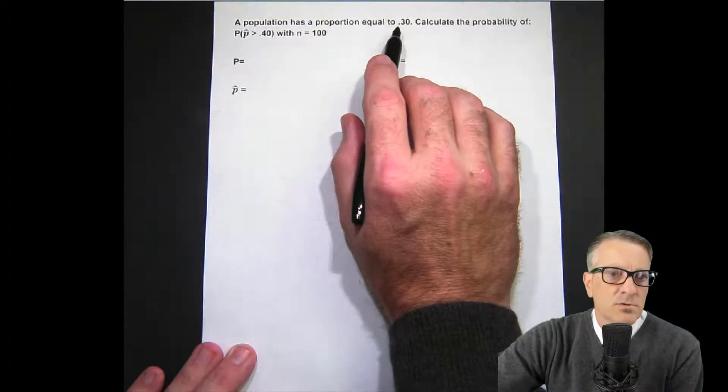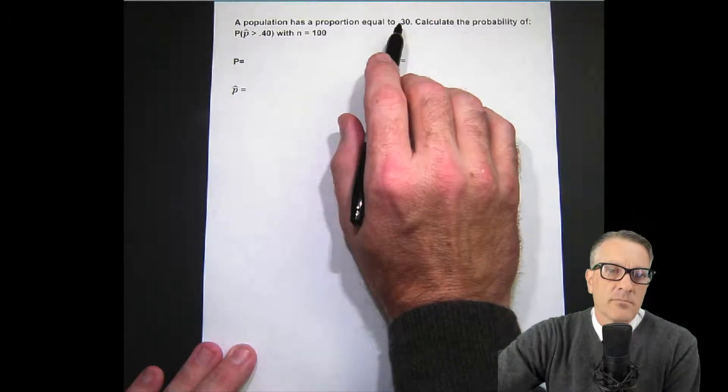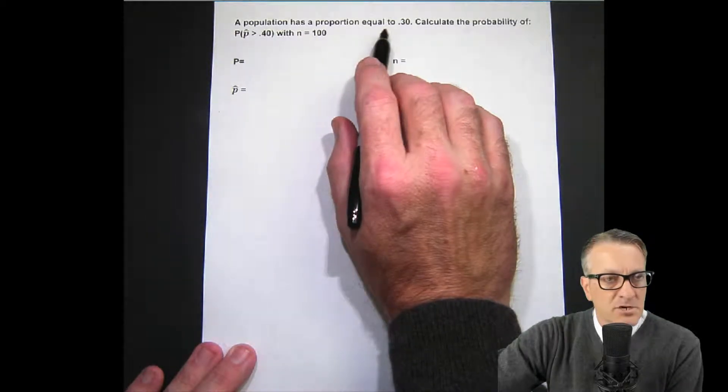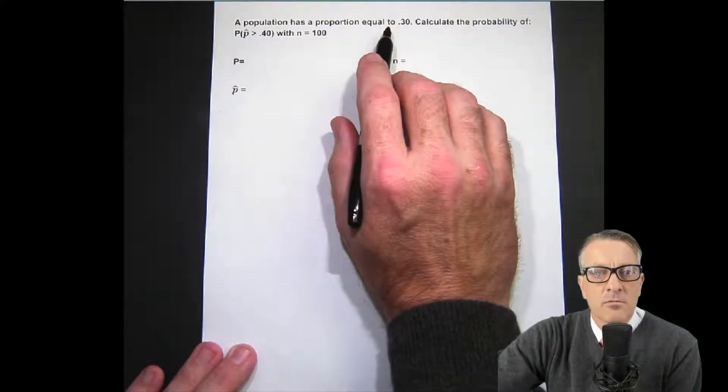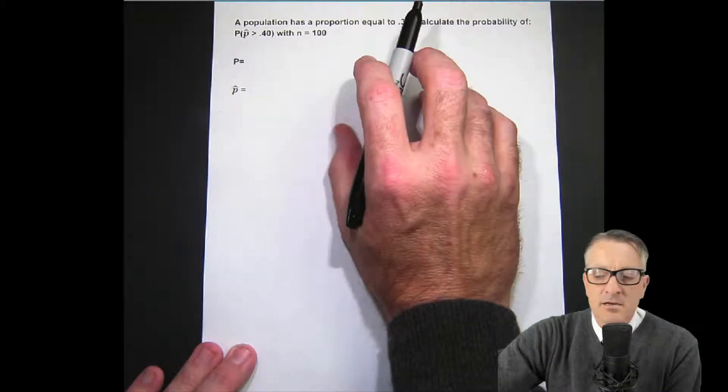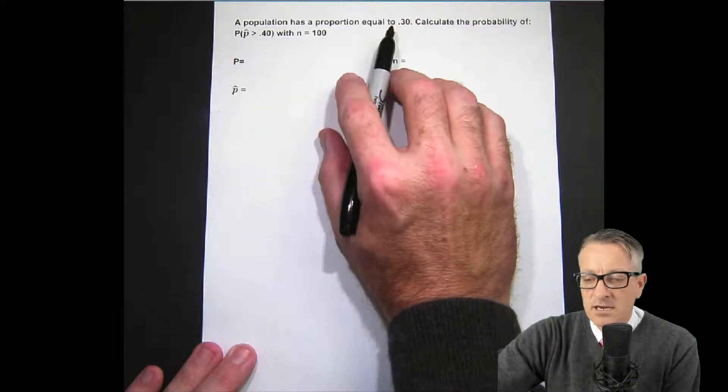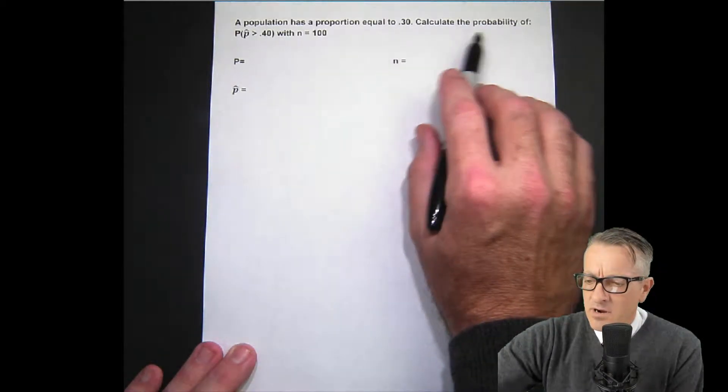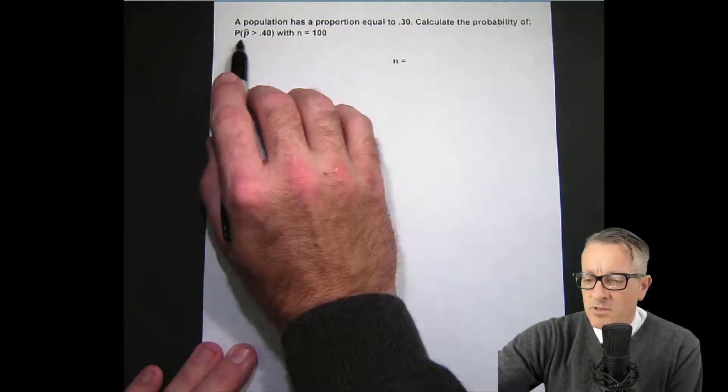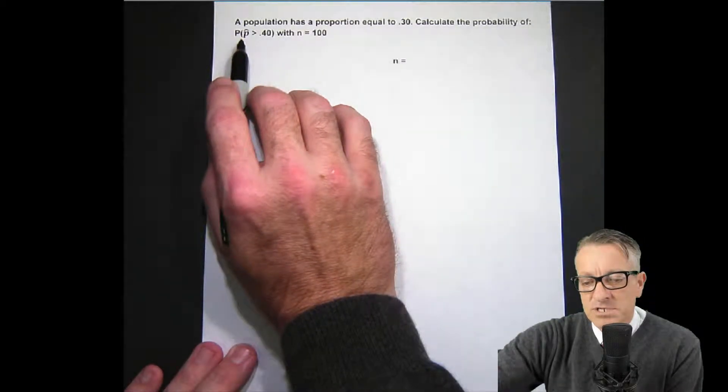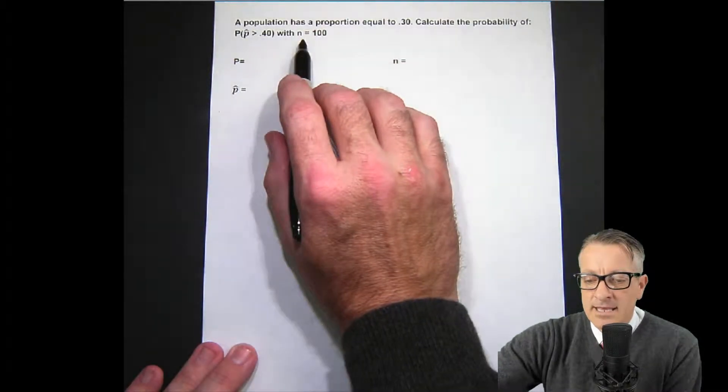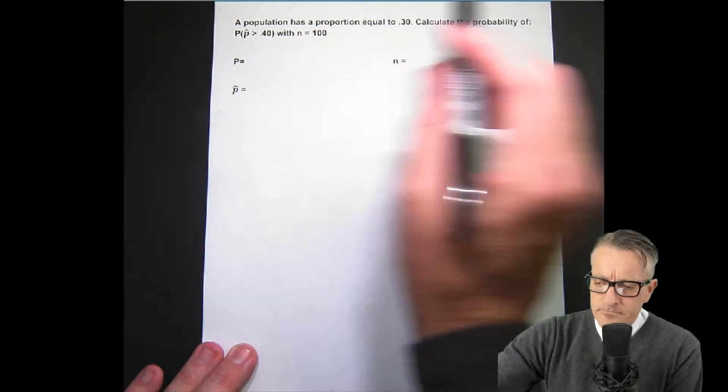This is similar to when we're doing hypothesis testing or regular sampling distribution problems where we have either a statistic or a parameter, meaning a population figure. This is our population figure. Calculate the probability of P hat, which is our sample proportion, being greater than 0.40 with n equal to 100.